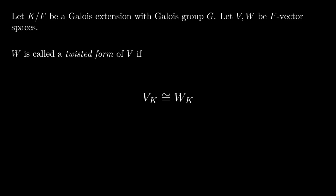So we turn to the problem of classifying these twisted forms. We've already discussed that all F-vector spaces isomorphic to V are twisted forms of V. How many other isomorphism classes of twisted forms are there?